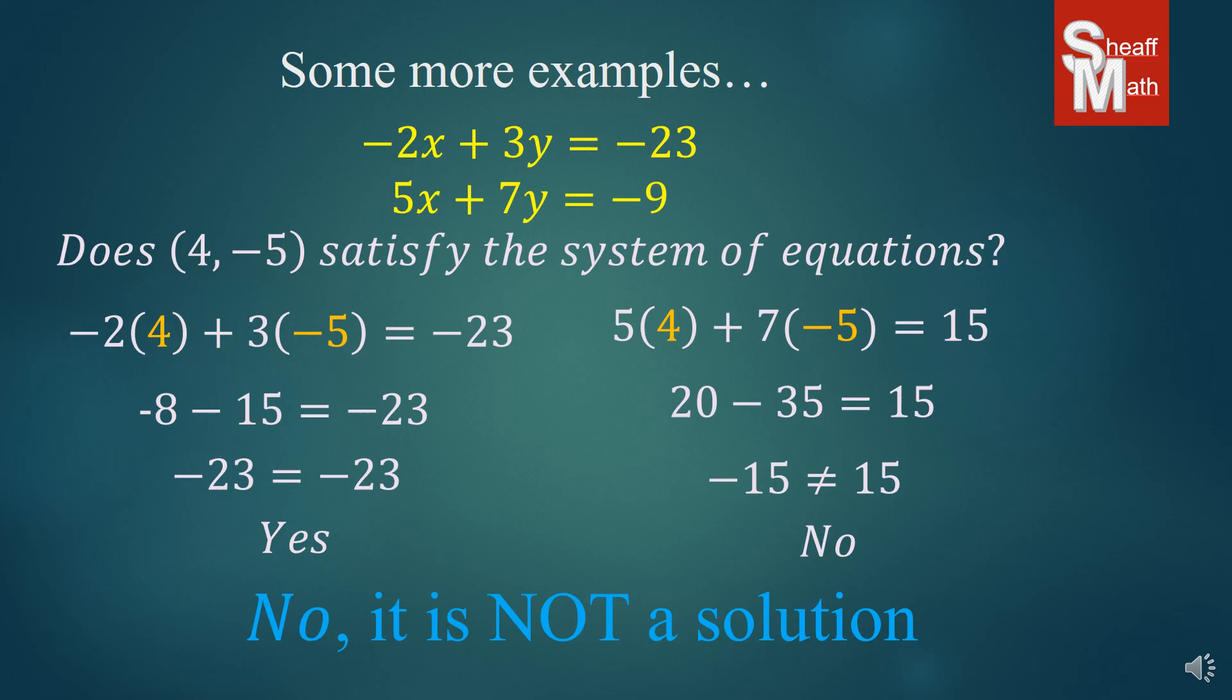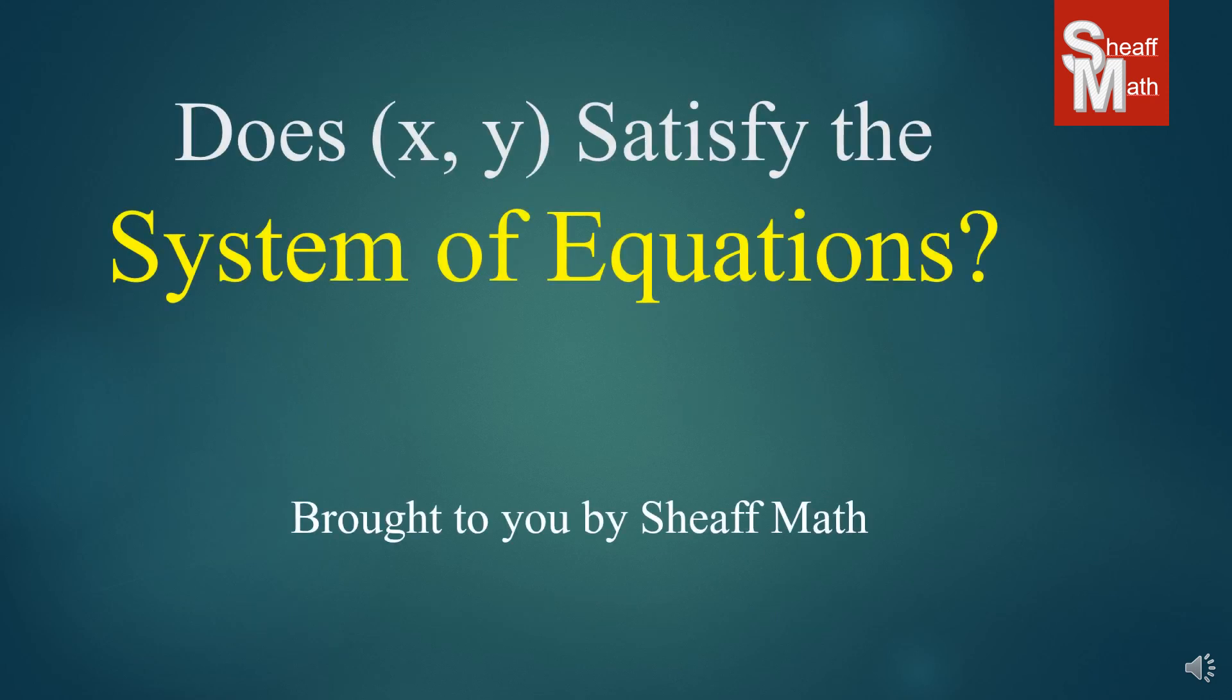On the first equation, that point goes through that line at some point, but it doesn't go through the second line. And so there you have it. That's a quick lesson on determining whether a solution, or an XY point, satisfies a system of equations.